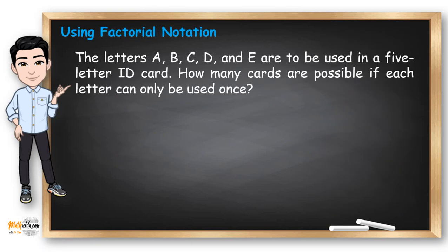Factorial notations are often used in counting techniques, like permutations, combinations, and counting techniques in general. For this example, we need to determine a 5-letter ID card, where these 5 letters are the only options we have. The letters A, B, C, D, and E are to be used in a 5-letter ID card. How many cards are possible if each letter can only be used once?